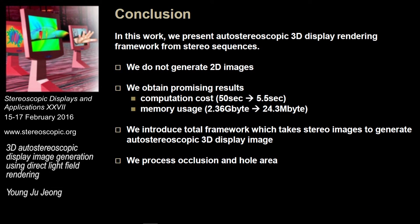In conclusion, in this work we present an autostereoscopic 3D direct light field rendering framework from stereo sequences. Most importantly, we do not generate 2D images anymore and obtain promising results. Computational time is reduced by about 80% and memory usage by about 99%. We introduce a total framework that takes stereo images and generates autostereoscopic 3D display images, and we can also incorporate hole-filling and boundary blending algorithms within this framework.